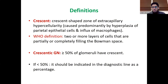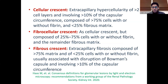If it is less than 50%, we should specify the percentage of crescents. We should always specify the percentage of crescents in the diagnostic report. There are different types of crescents — the active ones are cellular and fibrocellular crescents — based on consensus definitions from the Working Group of Renal Pathology Society.